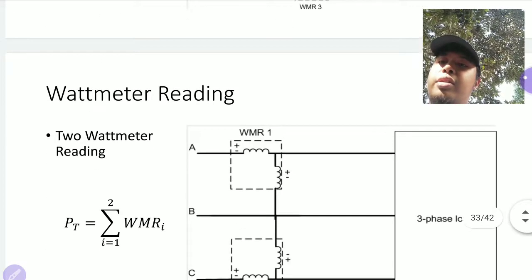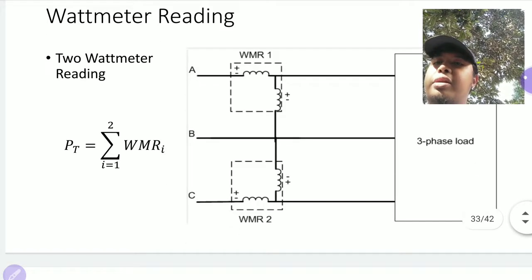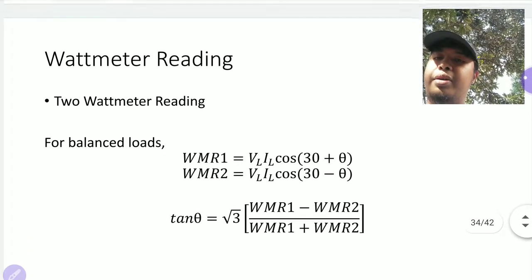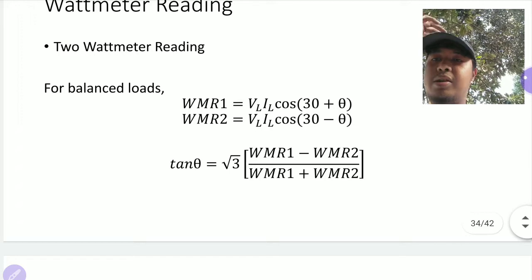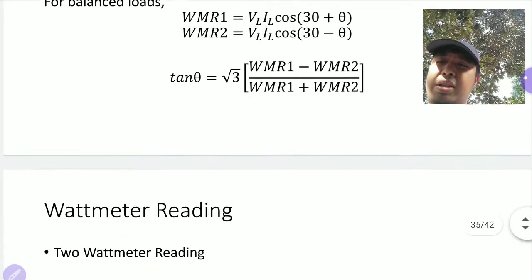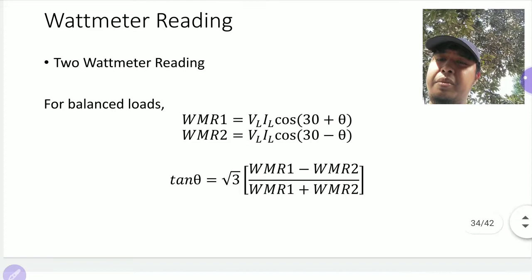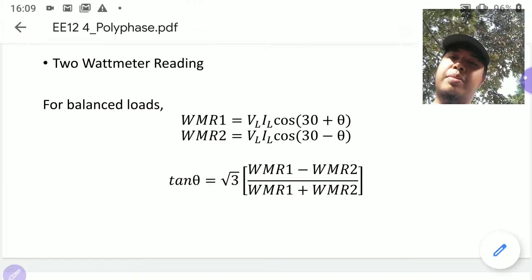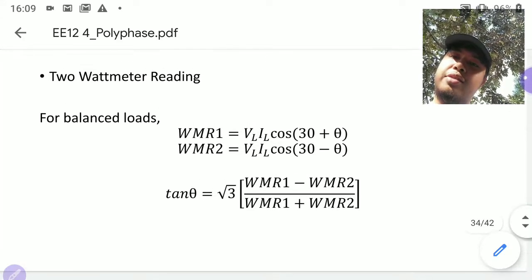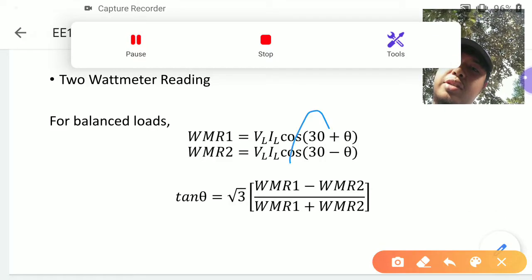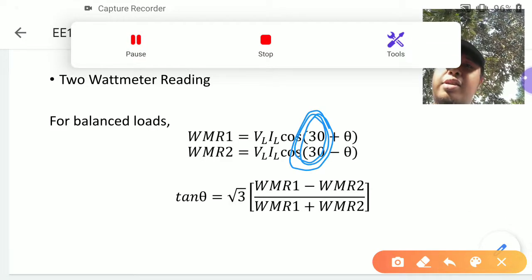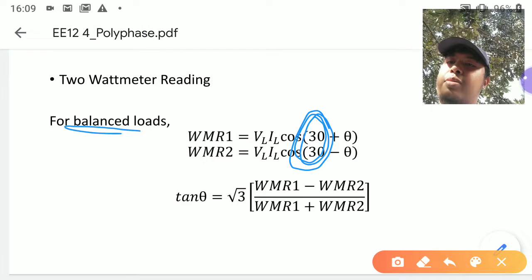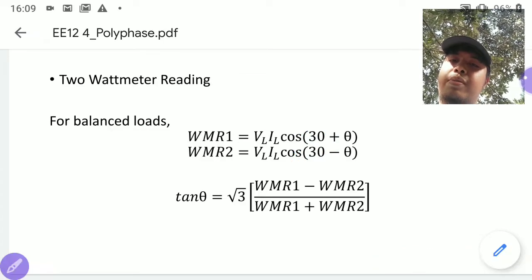So, to summarize: for the three-watt-meter method you use grounded systems with a neutral wire; for three-wire systems you use the two-watt-meter method. For balanced systems there is an equation involving a 30-degree offset — there is a diagram to describe this — but that 30-degree offset is only valid for balanced systems. If the system is not balanced you cannot use that equation.